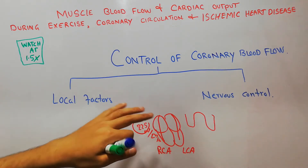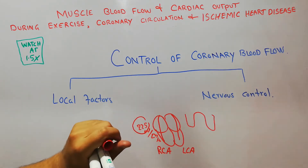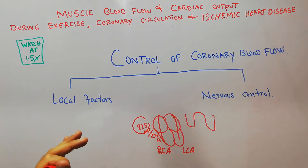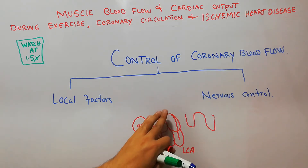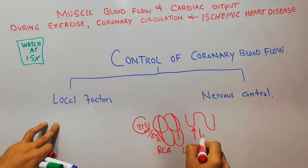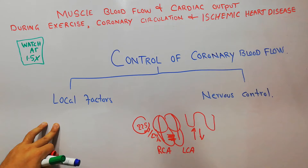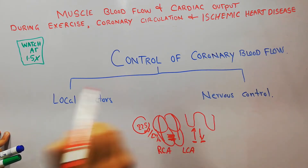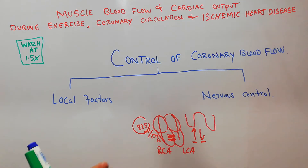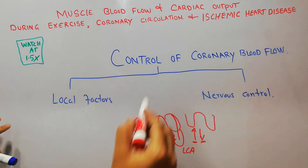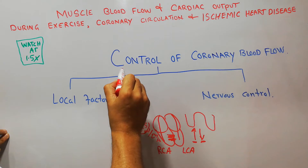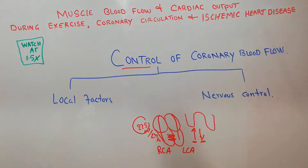When a person starts exercise or when the sympathetic system gets activated, or any other factors come into play which increase or decrease the metabolic activity of the heart muscles — when the needs of the body increase or decrease — then how is the coronary blood flow controlled? The two main factors are the local factors and the nervous control.